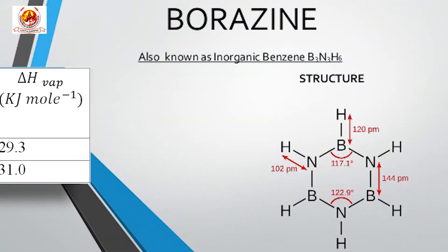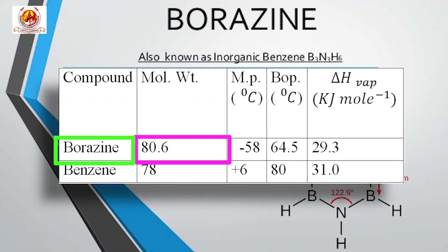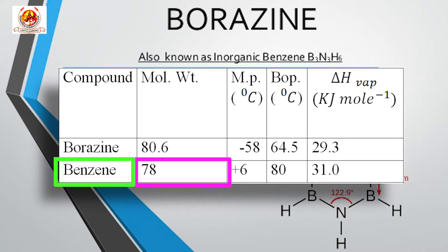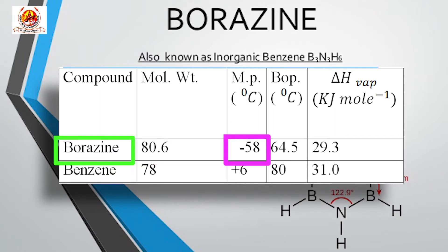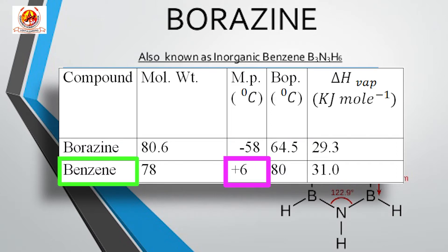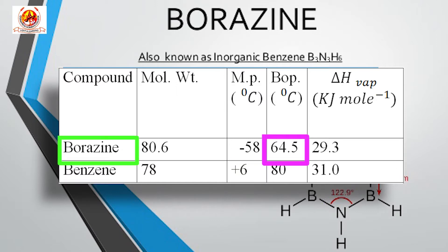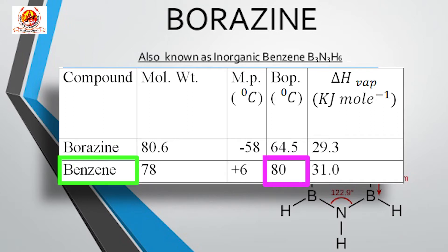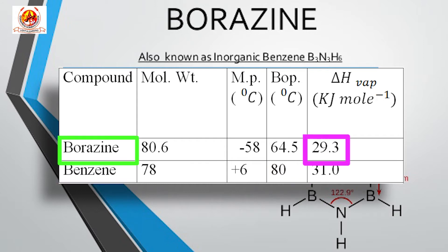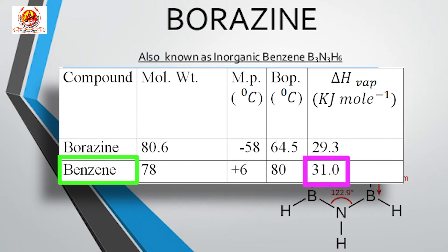For example, the molecular weight of borazine is 80.6 and that of benzene is 78. The melting point of borazine is minus 58 degree centigrade and that of benzene is plus 6 degree centigrade. The boiling point of borazine is 64.5 degree centigrade and that of benzene is 80 degree centigrade. The enthalpy of vaporization for borazine is 29.3 kilojoule per mole and that of benzene is 31.0 kilojoule per mole.